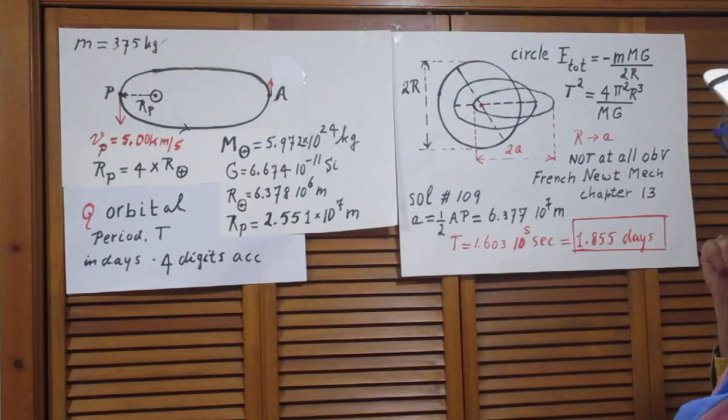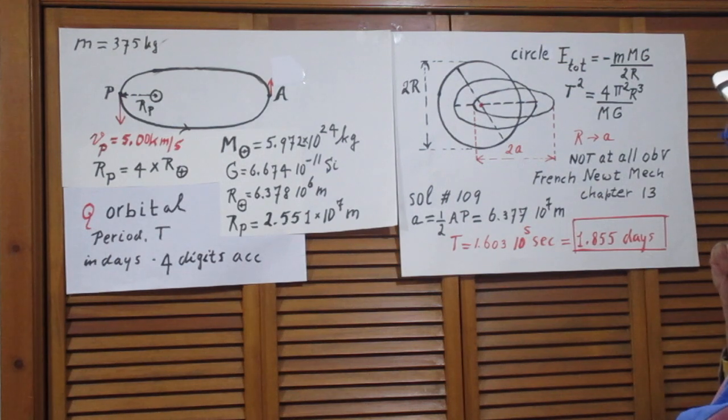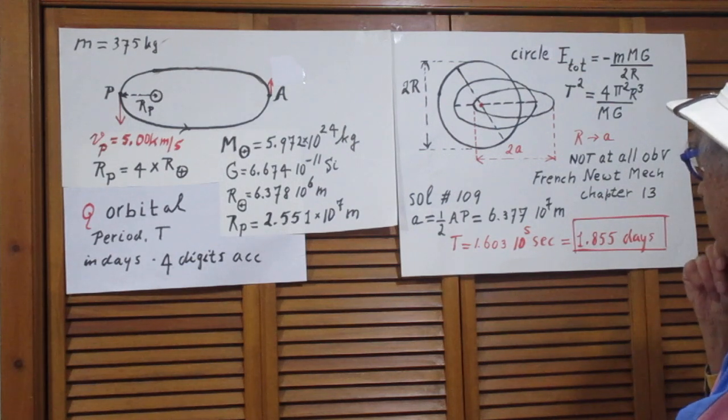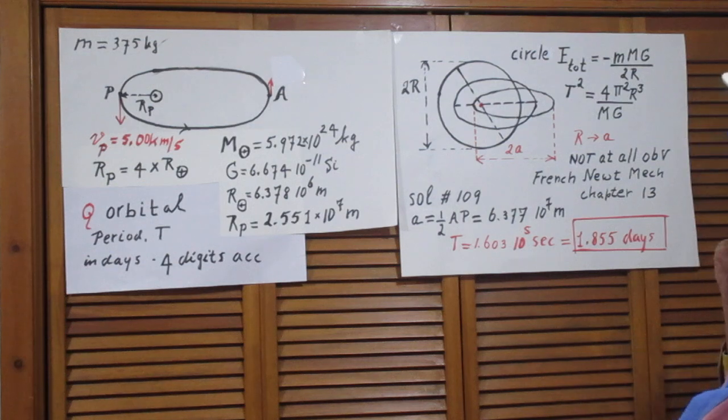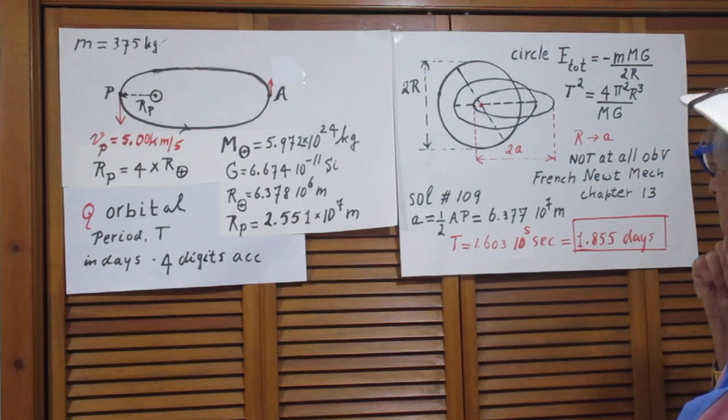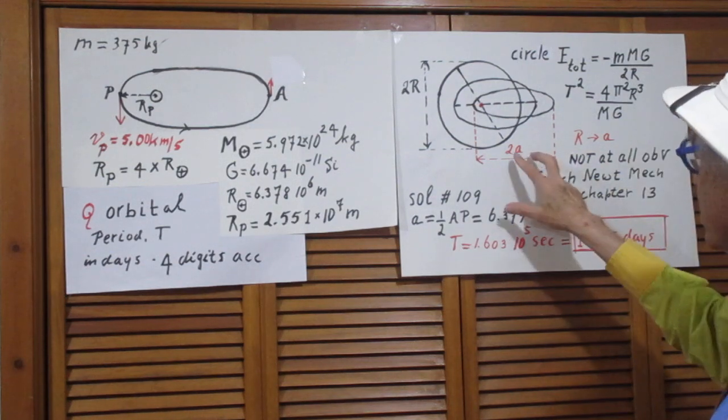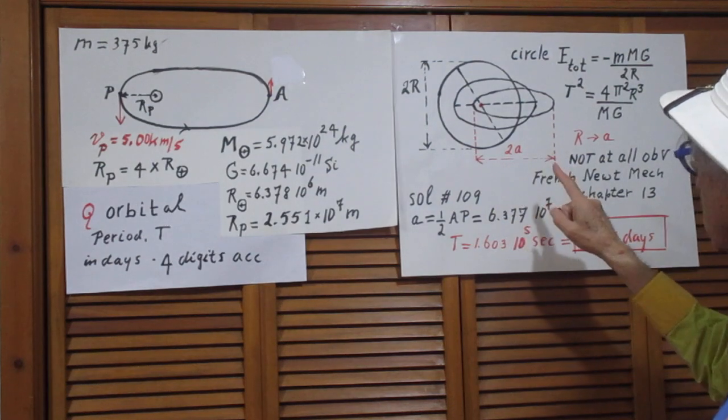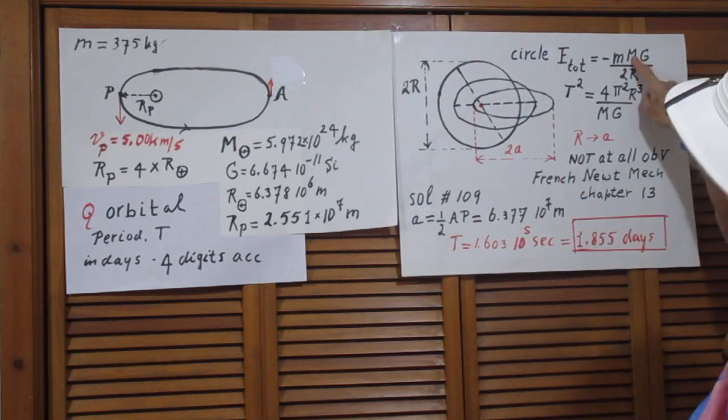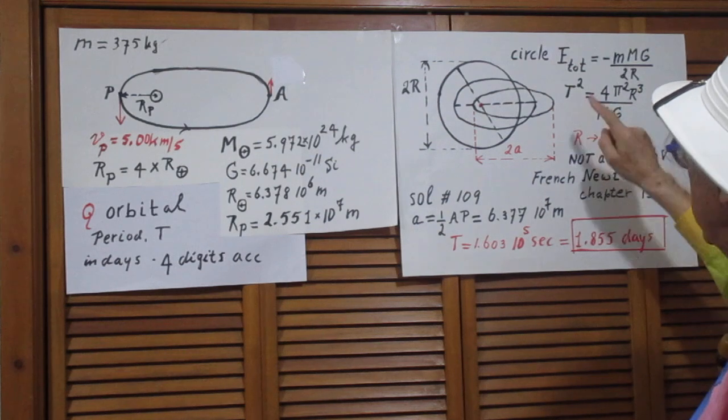Totally remarkable, before we go ahead, is that any ellipse around the earth, any, that has the same 2A that has the same 2A as any other, they have the same e-total and they have the same t-squared.